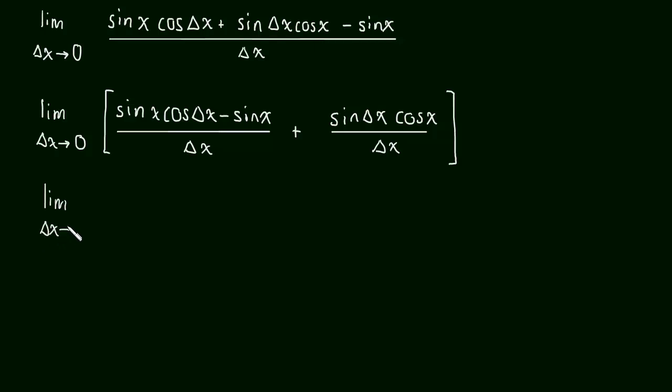So this is the limit of the sine of x times cos of delta x minus 1 all over delta x plus, again, this is the limit of the whole thing, sine of delta x cos x over delta x.